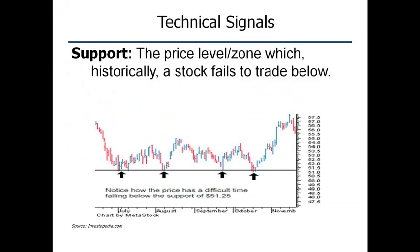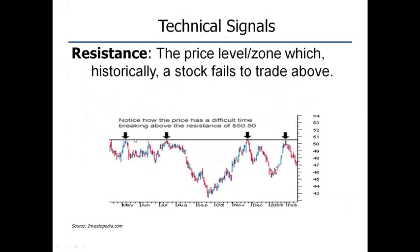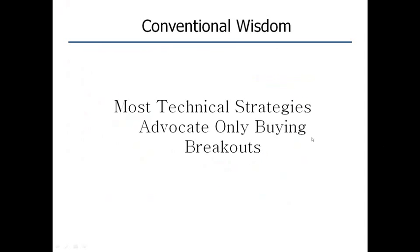Support is a zone or area on the chart where the stock bounces — in this case, at $51.25. Every time the stock pulls back towards that level, four times here, it just bounces. That is a floor or support. Resistance is the exact opposite — it's a ceiling, in this example at $50.50. Every time the stock gets up to the zone of resistance, it hits a ceiling and falls, bounces, hits a ceiling, falls, and repeats until it eventually breaks out above resistance or breaks down below support.